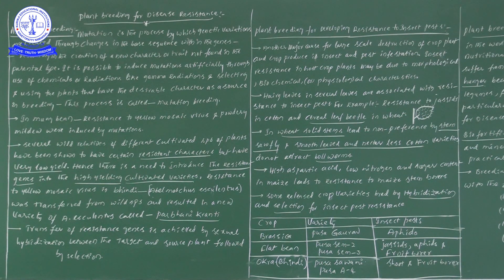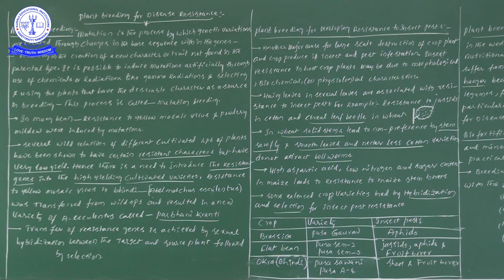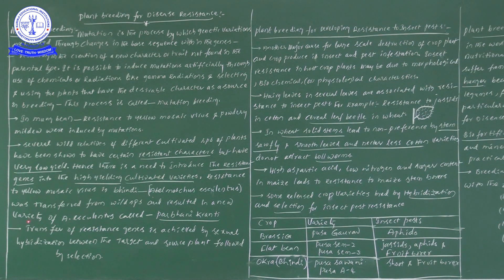That particular new variety is called Parbhani Kranti. The bhindi variety — scientific name Abelmoschus esculentus — had disease-resistant genes introduced into it, showing resistance to yellow mosaic virus. When those disease resistant genes were introduced into the bhindi variety, it converted into a new variety called Parbhani Kranti. The resistance to yellow mosaic virus in bhindi was transferred from wild species and resulted in a new variety of Abelmoschus esculentus known as Parbhani Kranti.